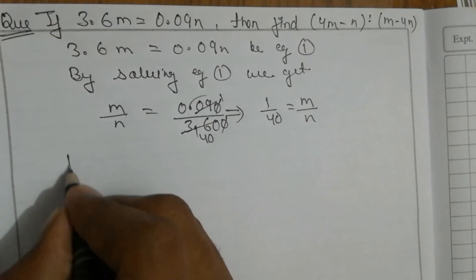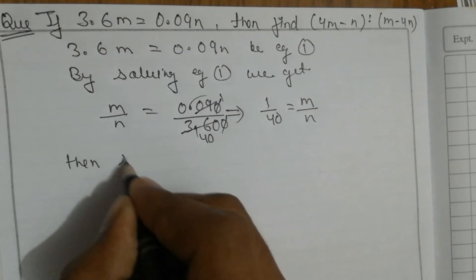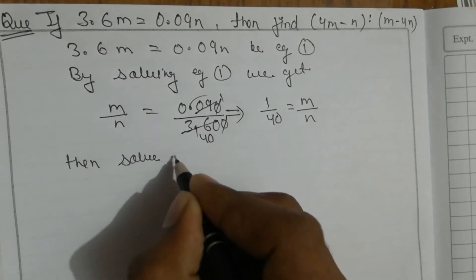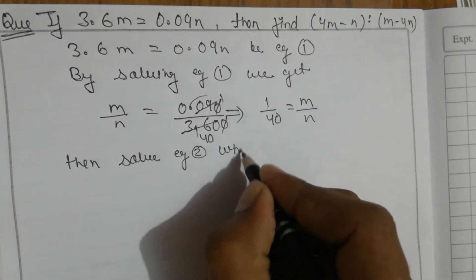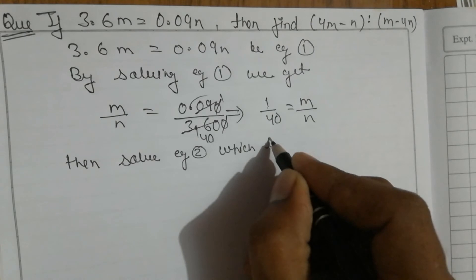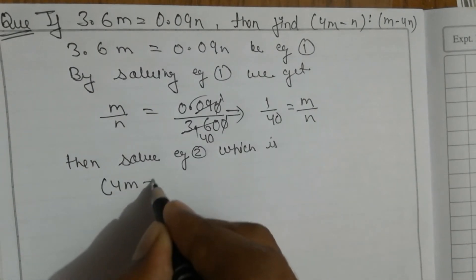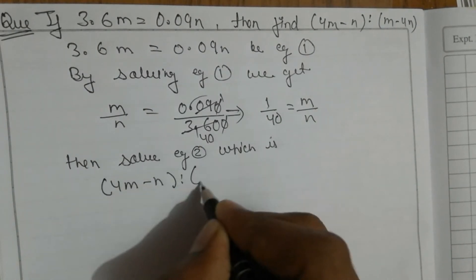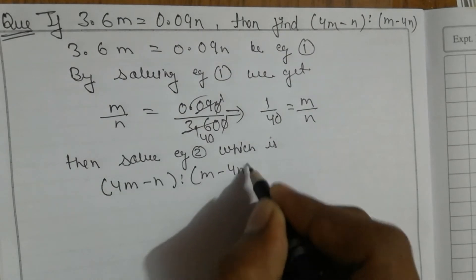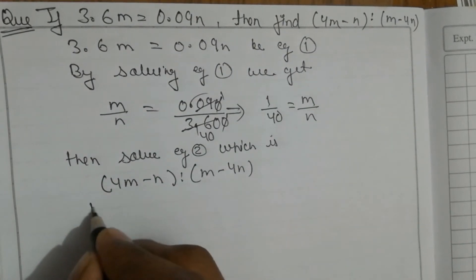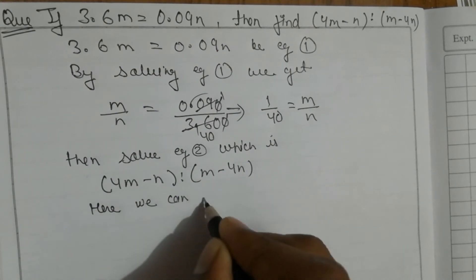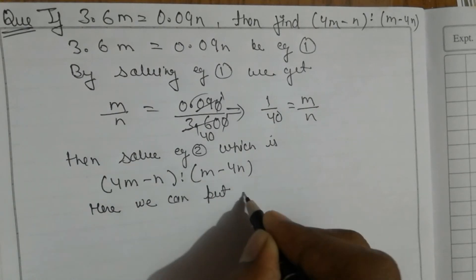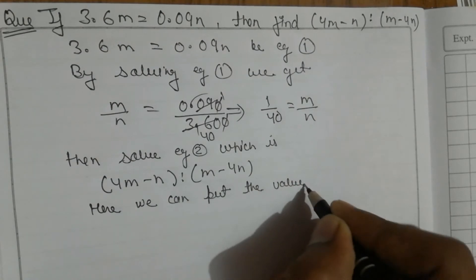Then solve equation 2, which is (4m - n) raised to (m - 4n). Here we can put the value of m and n.